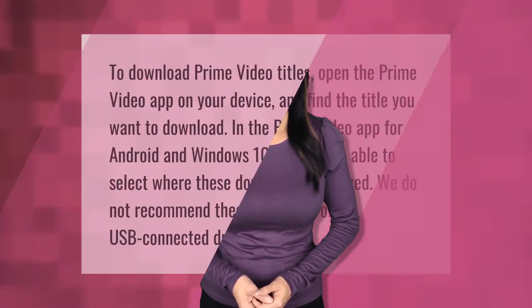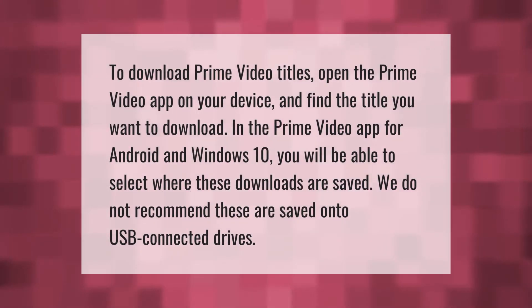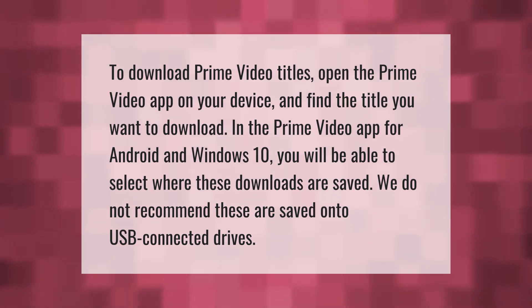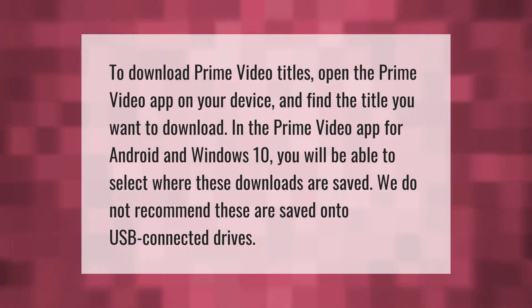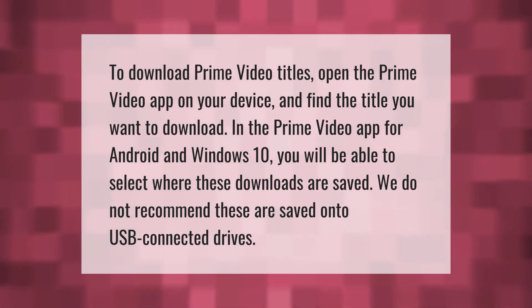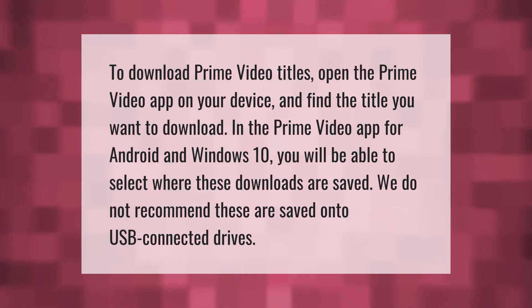To download Prime Video titles, open the Prime Video app on your device and find the title you want to download. In the Prime Video app for Android and Windows 10, you will be able to select where these downloads are saved. We do not recommend that these are saved onto USB connected drives.